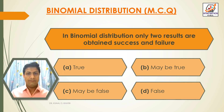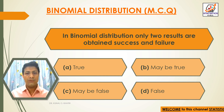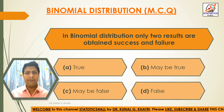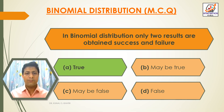Next question: In binomial distribution, only two results are obtained — success and failure. Option A: True. Option B: May be true. Option C: May be false. Option D: False. The answer is option A — True. In binomial distribution only two results are obtained: success and failure.